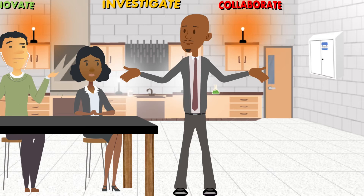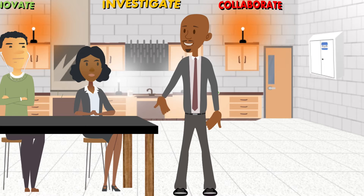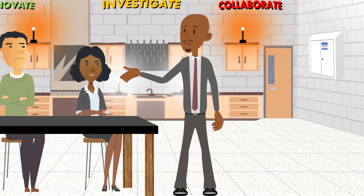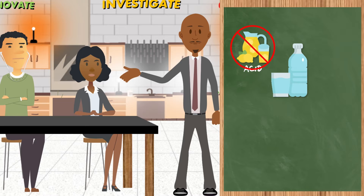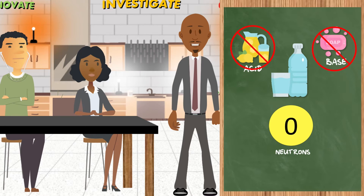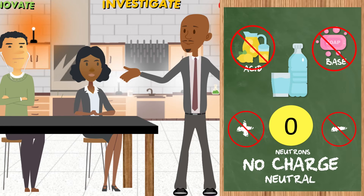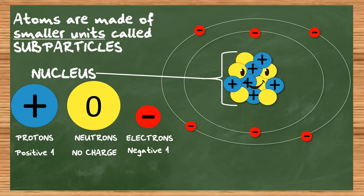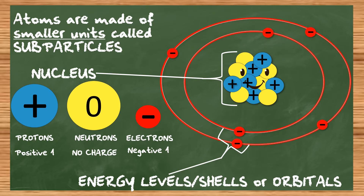What does neutral mean? Remember the situation you were describing to me earlier, and I said I'm not getting involved in that? That's called being neutral — not taking a side. So just like pure water is not an acid nor a base, neutrons are not positive or negative. They have no charge. Electrons are the negatively charged particles around the outside of the nucleus, orbiting on electron shells, orbitals, or better yet, energy levels.